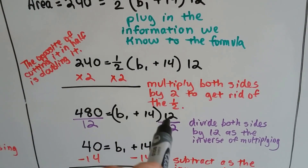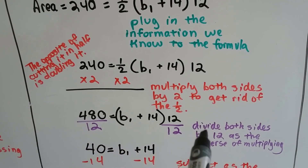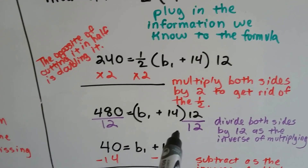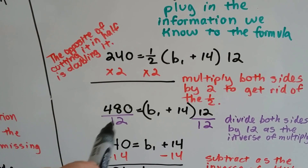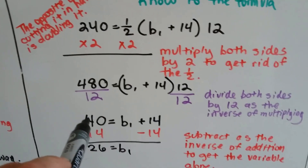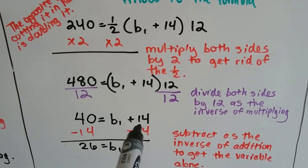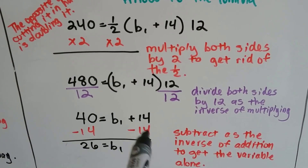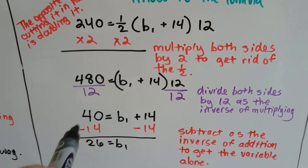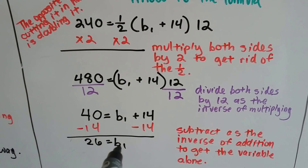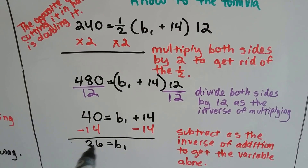Because this is multiplication, the 12 is multiplied by the parentheses, so we're going to divide both sides by 12 to get rid of the 12. 12 divided by 12 becomes 1 and cancels itself out. 480 divided by 12 becomes 40. Now our equation says 40 is equal to base 1 plus 14. Subtraction is the inverse of addition, so we subtract 14 from both sides. 40 minus 14 is 26, and we've isolated base 1 by itself on this side of the equal sign, and we know that it's equal to 26.